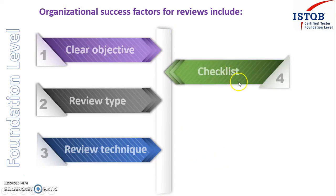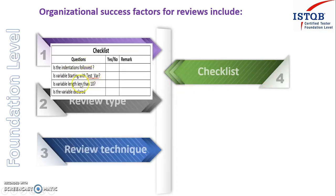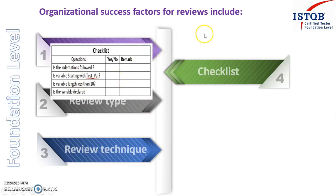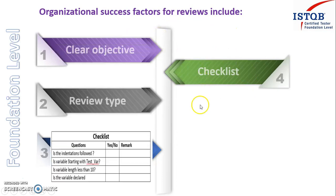The fourth point is the checklist. How good is your checklist to perform the review? For your product, what type of checklist have you prepared so that you are not missing any bug and are maintaining the quality of that product? If the quality is maintained, that will be called a successful review process, and it will help in the success of the organization.